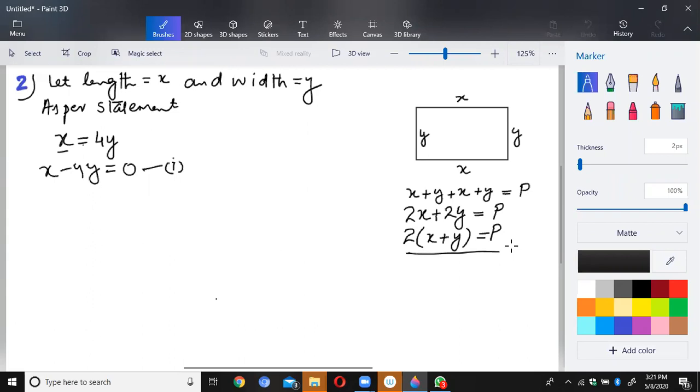Perimeter of rectangle is 150. If you write here, 2 into x plus y is equal to 150.